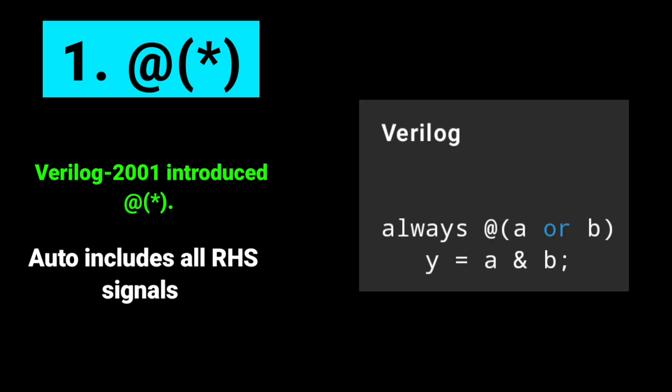The first one is @(*), which is basically a shortcut. Manually listing all signals is error prone. That's why Verilog 2001 introduced @(*). It automatically includes all signals on the right-hand side. Here's the example of the shortcut one.